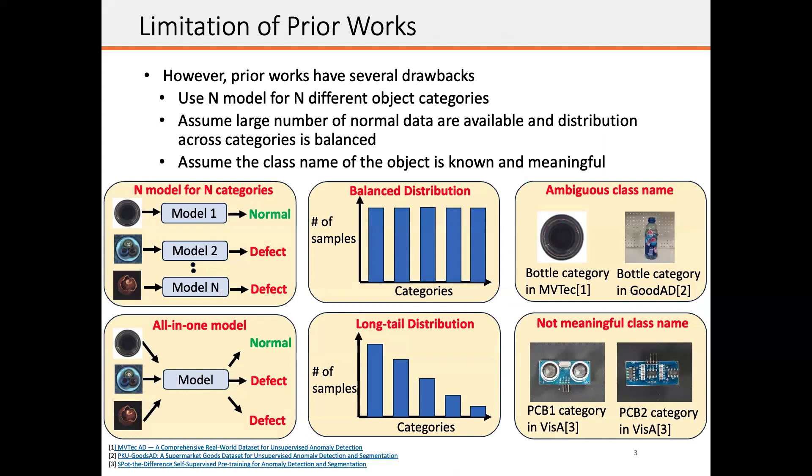However, prior works have several drawbacks. First, they use N models for N different object categories. For example, three models are used for three different object categories. Ideally, we would like to have one model to detect defects for all the categories.